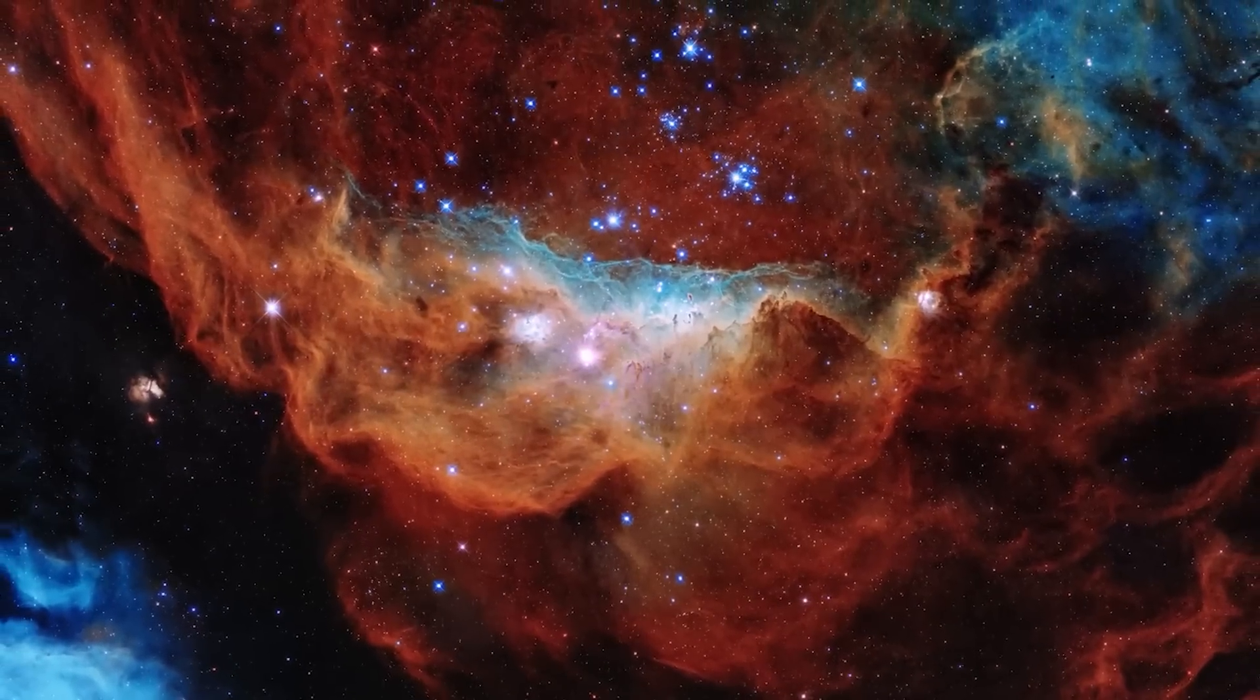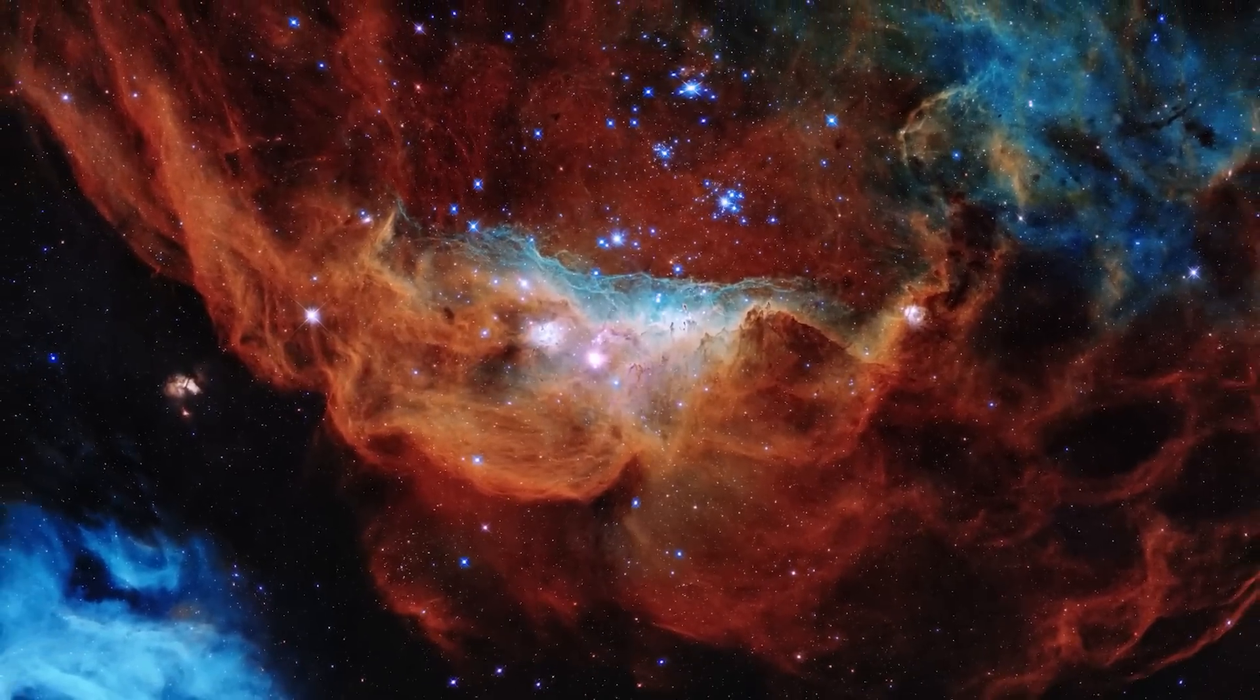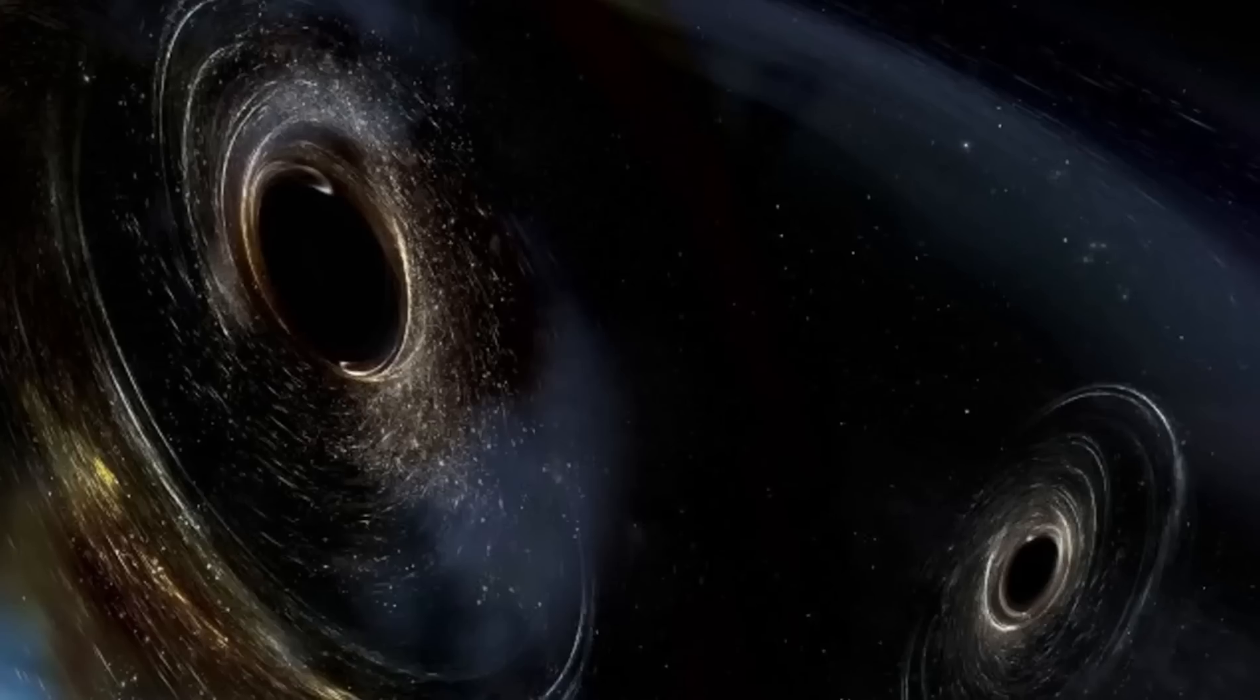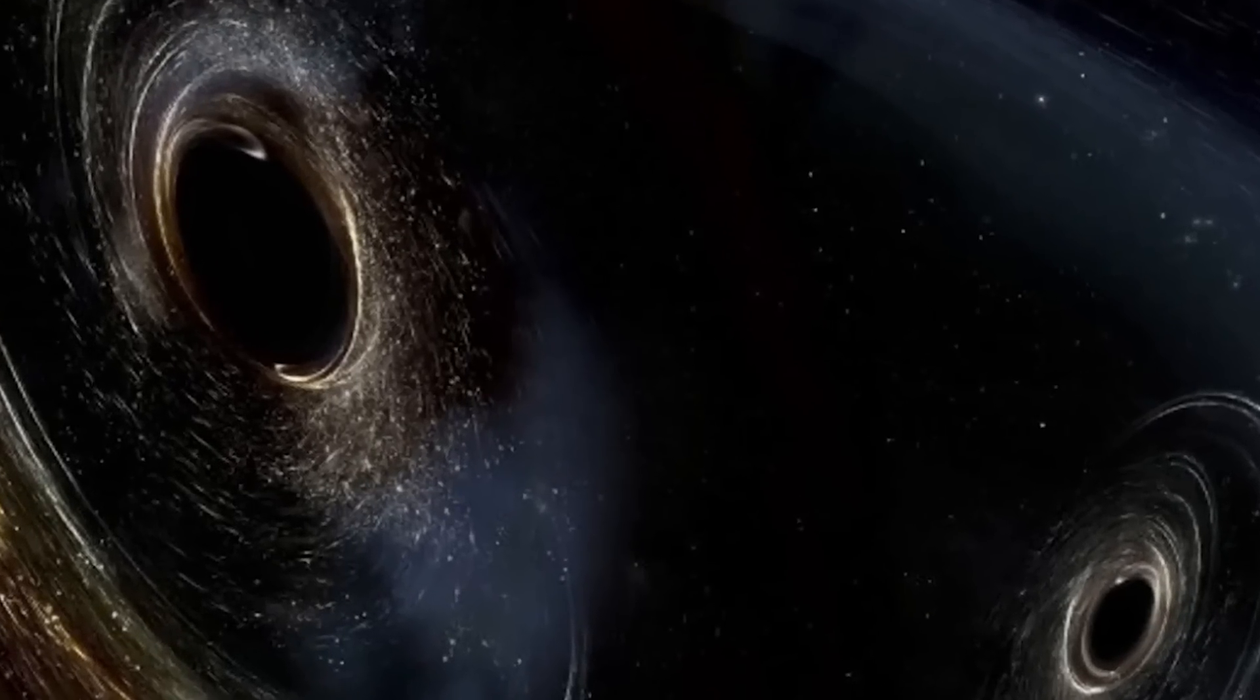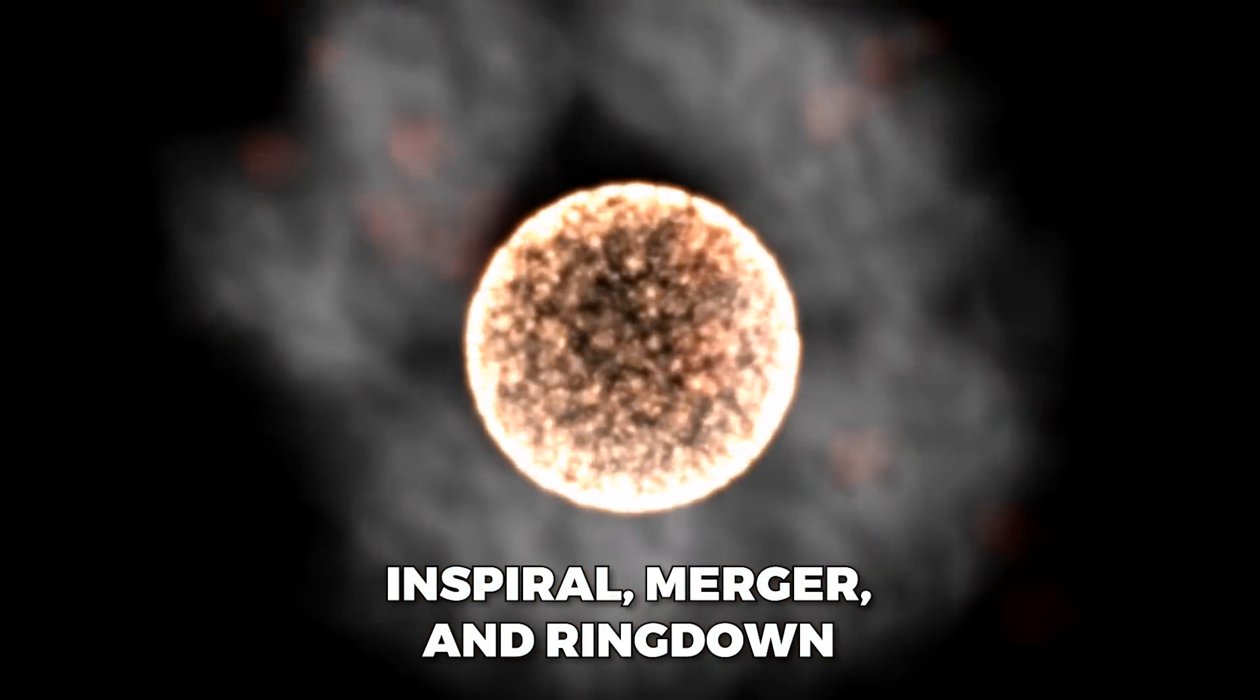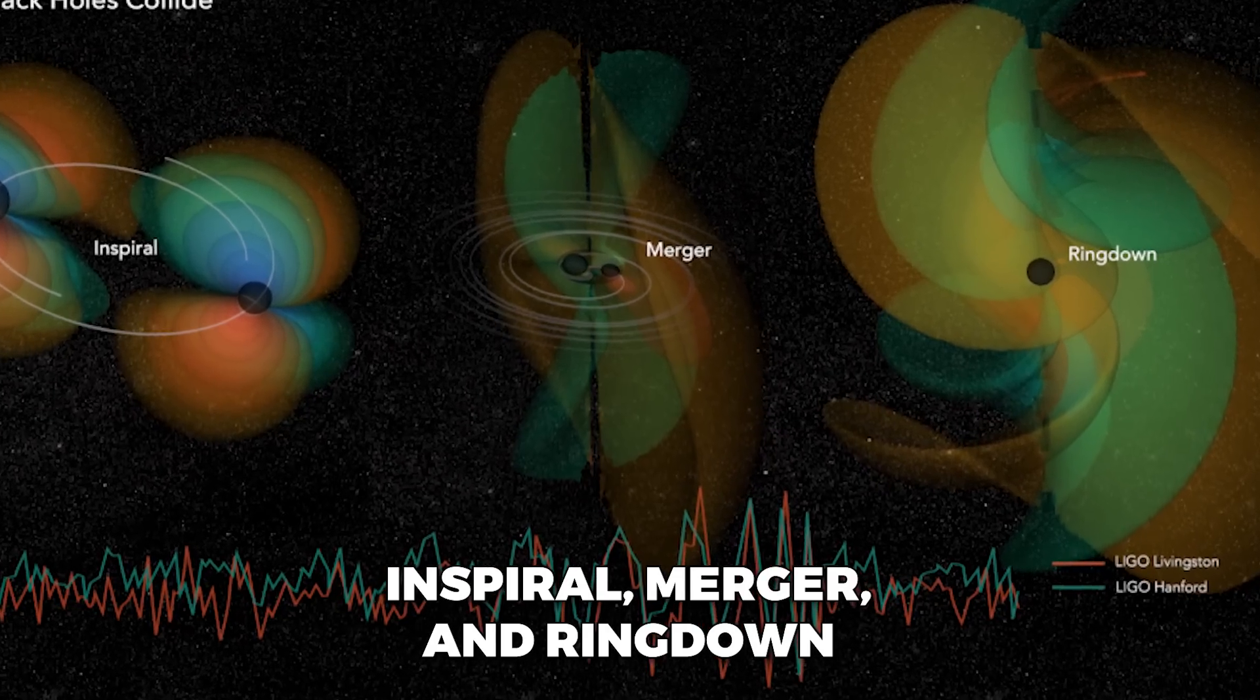In recent years, there have been exciting discoveries in the study of black holes, such as the first direct detection of gravitational waves, which were generated by two merging black holes. The process of a black hole merger can be broken down into three stages: in-spiral, merger and ring-down.